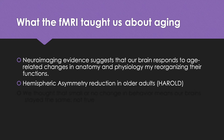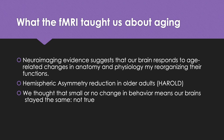The two major theories are HAROLD and CRUNCH, and they're very much related. HAROLD stands for hemispheric asymmetry reduction — it's essentially a double negative. Basically, when you look at the brain of an older adult doing a cognitive task, both hemispheres are active. When you look at a younger adult, typically only the left, or sometimes the right, hemisphere shows activation. That's what the HAROLD hypothesis says.